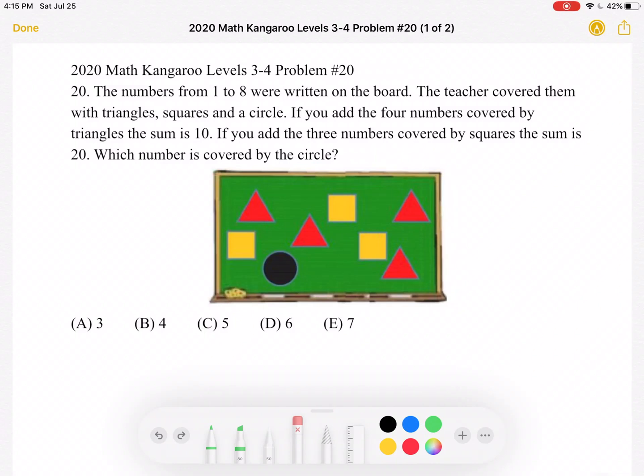This is the 2020 Math Kangaroo Levels 3-4 Problem Number 20. The numbers from 1 to 8 were written on the board. The teacher covered them with triangles, squares, and a circle.